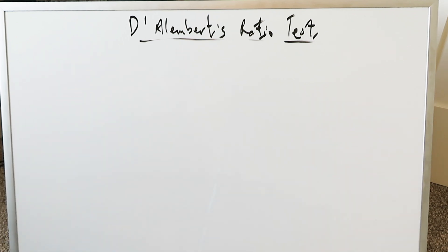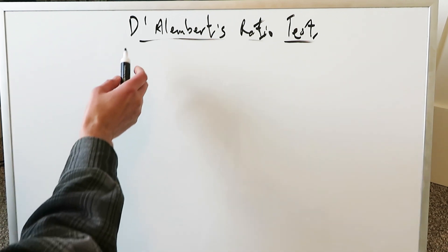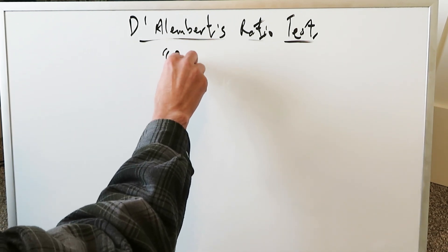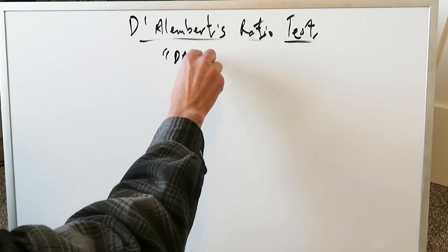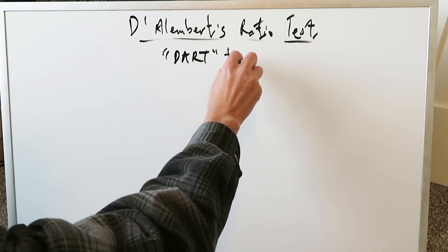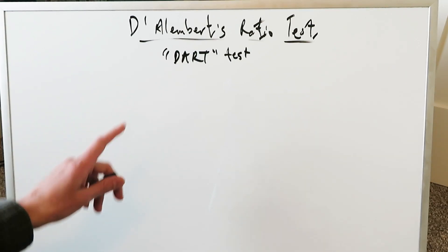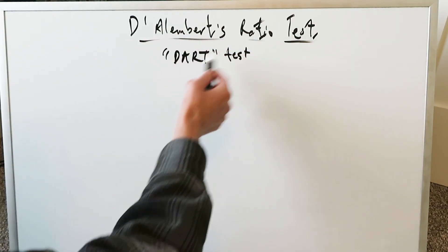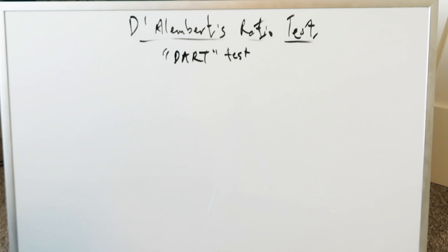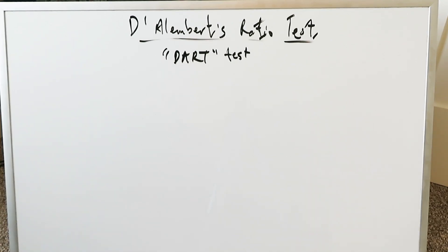This specific test — D.L.M. Burt's ratio test — I don't know how to pronounce it properly, but he was a French mathematician. The name of this specific test is informal, and it lends itself to a very interesting name. How about we just call it the DART test? We'll just call it DART in this video. It would lend itself to a good name: D, A, R, T — DART. This is a good test for measuring convergence and divergence.